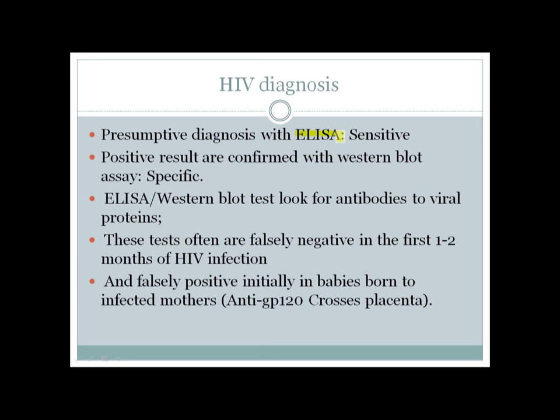To diagnose HIV, the screening test is ELISA. ELISA is a sensitive test but has a high false positive rate, so if we get a positive ELISA we need to confirm it with Western blot, which is a very specific test. In ELISA or Western blot we look for antibodies to viral proteins, and those tests are often falsely negative in the first one or two months of HIV infection.